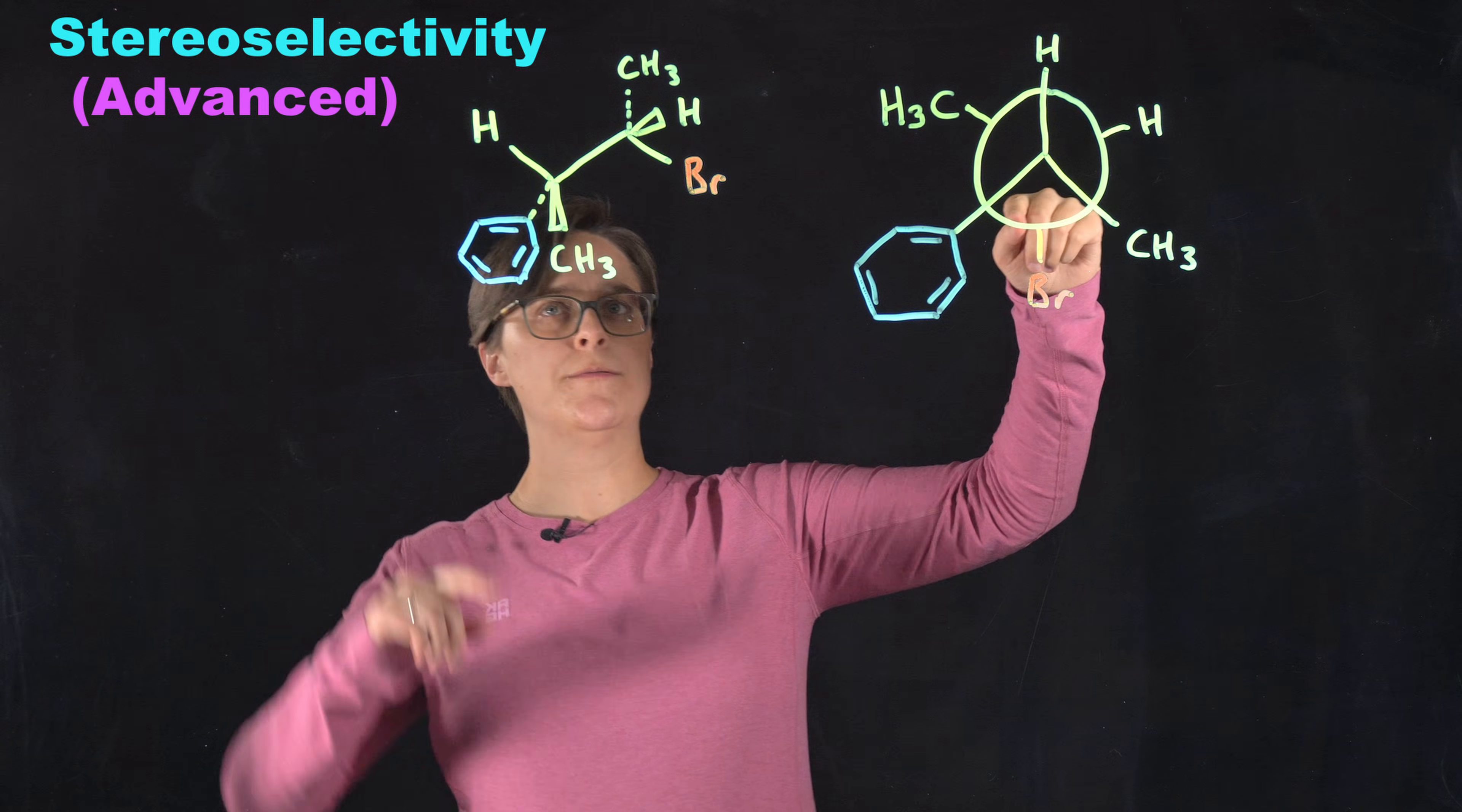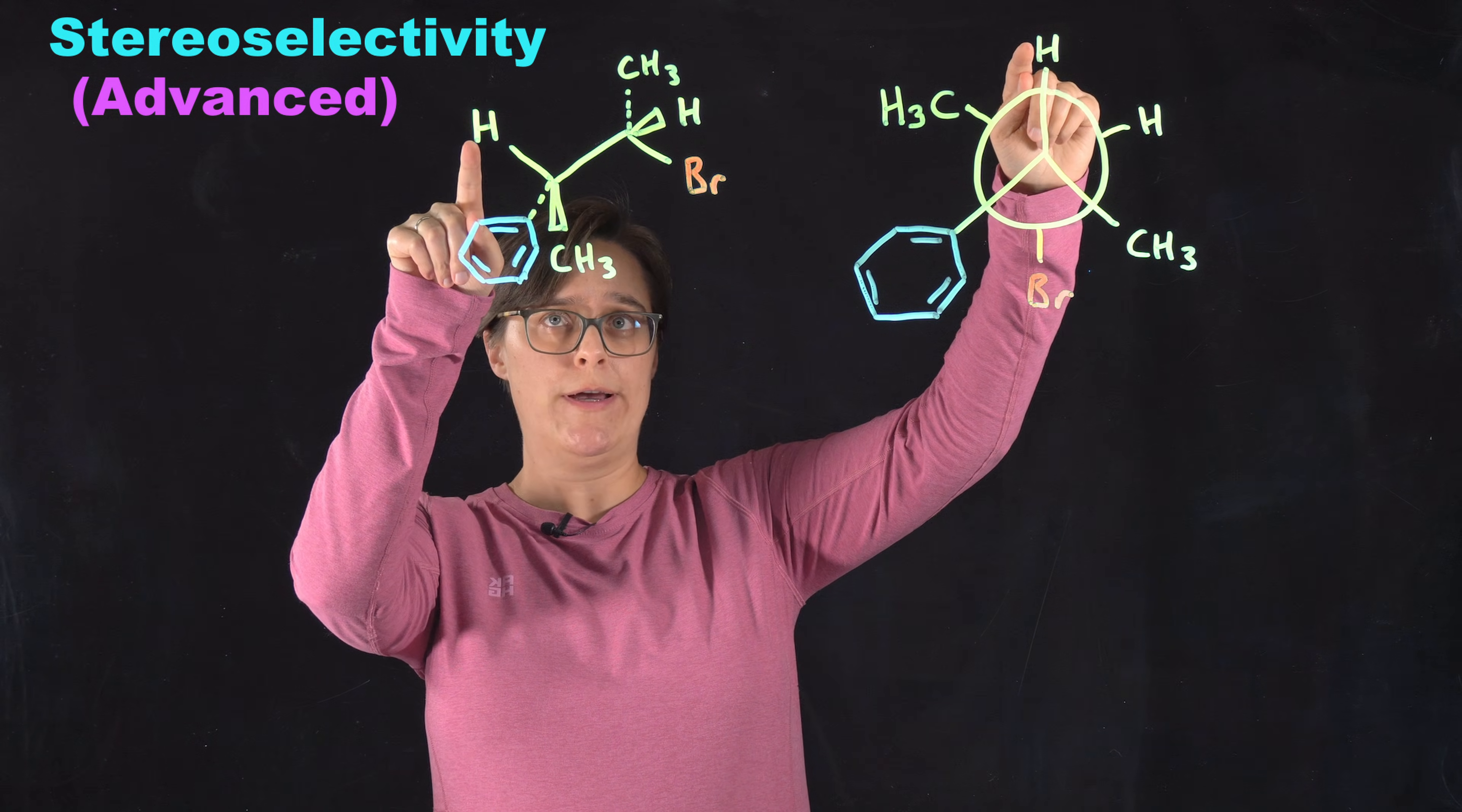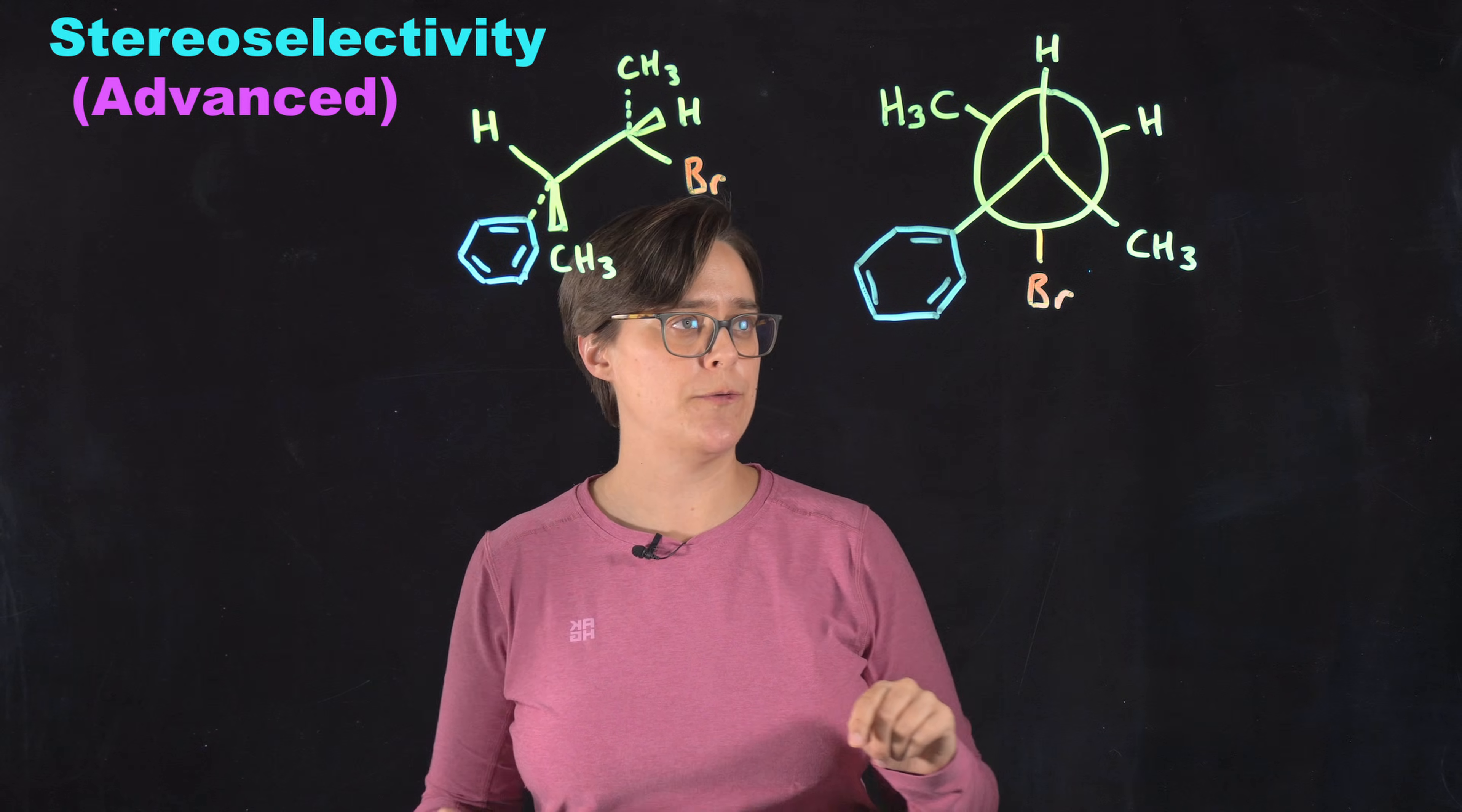So this circle represents our carbon in the front. Down into the right, we have a methyl group. Down into the left, we have this phenyl group. And straight up at the top, we have our hydrogen. This is our hydrogen that's going to react. Carbon in the back, you just see the bonds sticking out at the side. Straight down, we have the bromine. Up into the right, we have a hydrogen. Up into the left, we have a methyl group.